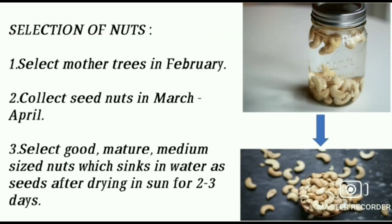Selection of nuts: select mother plants in February, collect the seed nuts in March to April. Select good, mature, medium-sized nuts which sink in water as seeds after drying in sun for 2–3 days. As you can see in the picture, the nuts sinking to the bottom of the jar are selected for propagation.